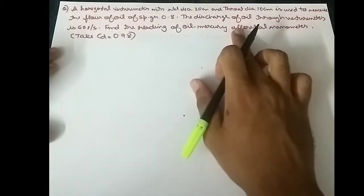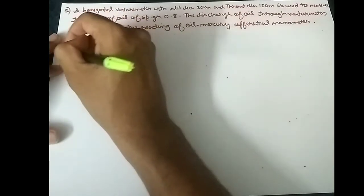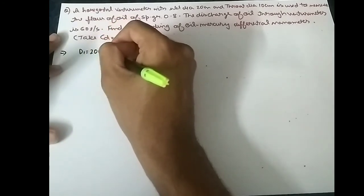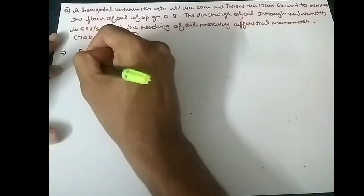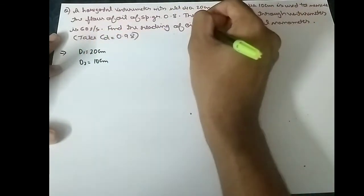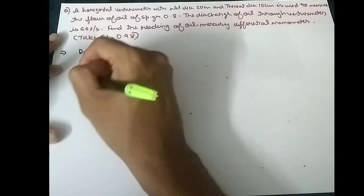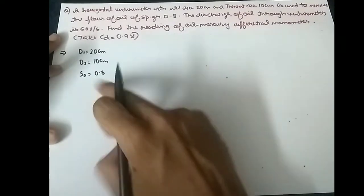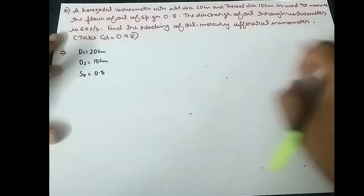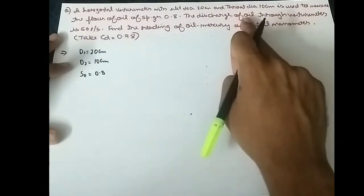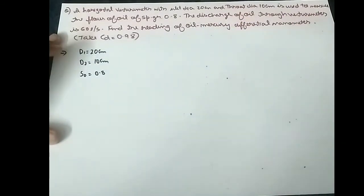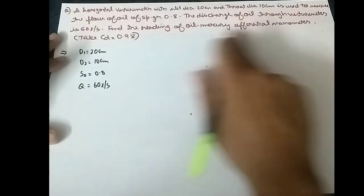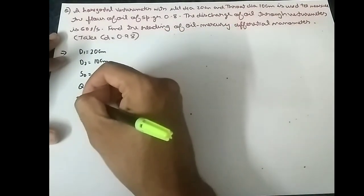Now let's list the given data. D1 is 20 centimeter, D2 is 10 centimeter. The specific gravity of oil, SO, is 0.8 — that is the specific gravity of the liquid flowing through the pipe. The discharge Q is given as 60 liters per second. We have to find X, the manometer reading.